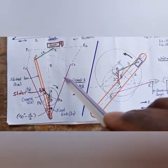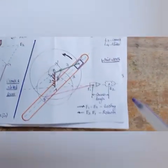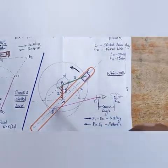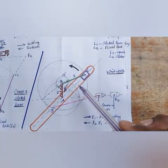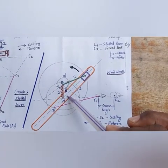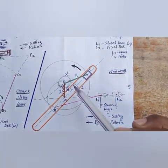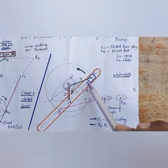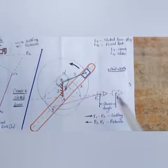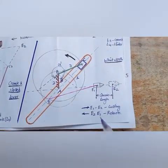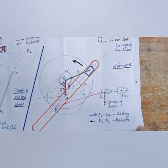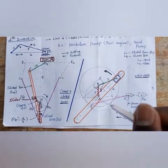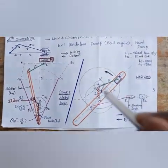In the Whitworth quick return mechanism, L1 is the slotted lever, L2 is the fixed link, L3 is the crank, and L4 is the slider. This also has E1 to E2 as the cutting stroke and E2 to E1 as the return stroke. Both the crank and slotted lever and the Whitworth quick return mechanism are very important topics.